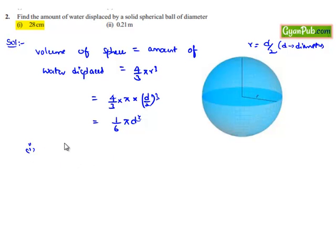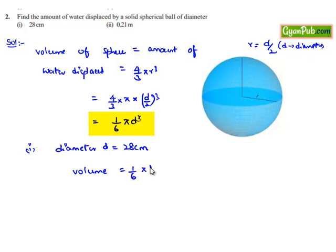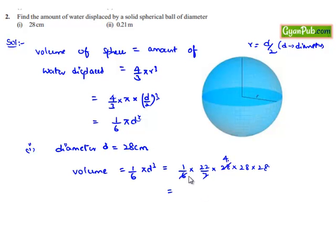In the first case the diameter is given as 28 centimeters. Therefore the volume equals (1/6) × π × d³, that is 1/6 × 22/7 × 28 × 28 × 28. Here 7 goes into 28 four times, 6 goes into 3 times, and 6 goes into 22 eleven times, giving 11,498.6 centimeter cube.